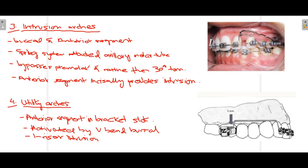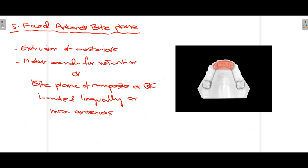The fourth fixed appliance is utility arches, similar to intrusion arches. The key difference is that in utility arches the anterior segment is engaged directly into the bracket slots, whereas in intrusion arches the anterior segment is tied to the segmental arch wire. Both achieve intrusion of incisors, and utility arches are activated using a V-bend buckle.